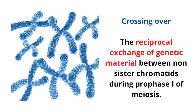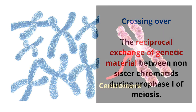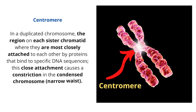Crossing over: the reciprocal exchange of genetic material between non-sister chromatids during prophase one of meiosis. Centromere: in a duplicated chromosome, the region on each sister chromatid where they are most closely attached to each other by proteins that bind to specific DNA sequences. This close attachment causes a constriction in the condensed chromosome.